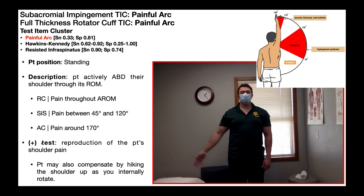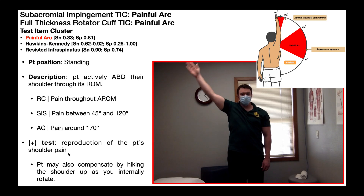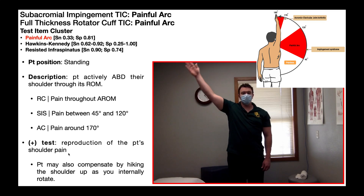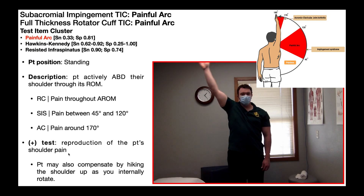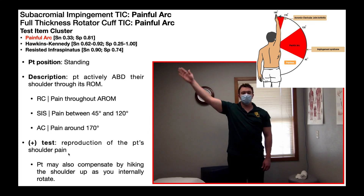So what constitutes a positive painful arc test? It would be reproduction of the patient's shoulder pain occurring over a particular arc of motion — a range of angles. The study that investigated the painful arc test defined those angles as between 60 degrees of abduction and 120 degrees of abduction.